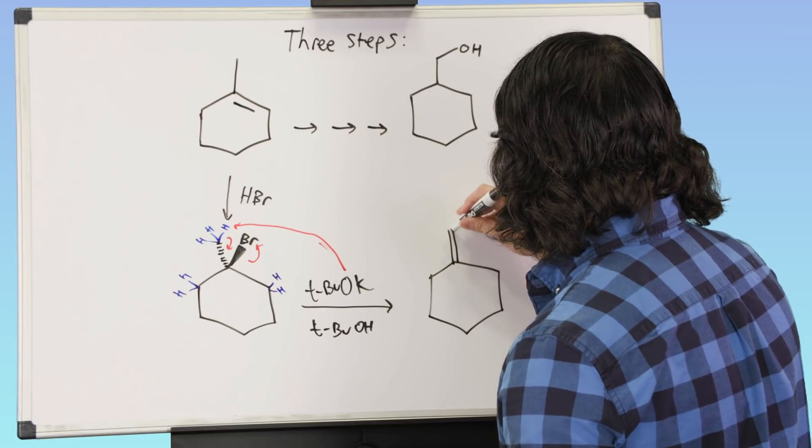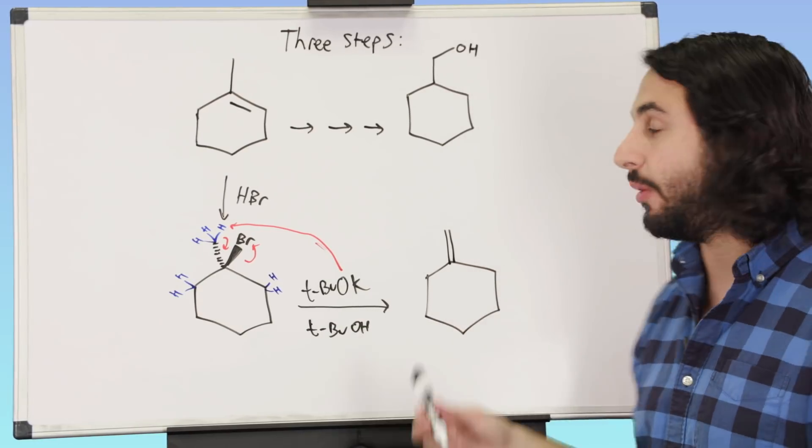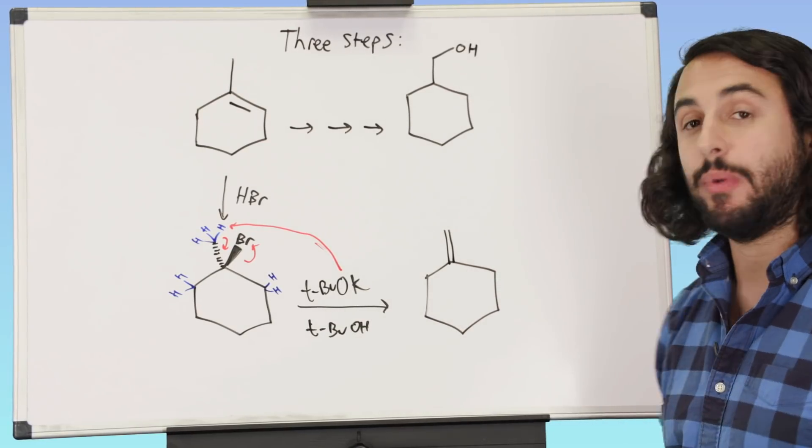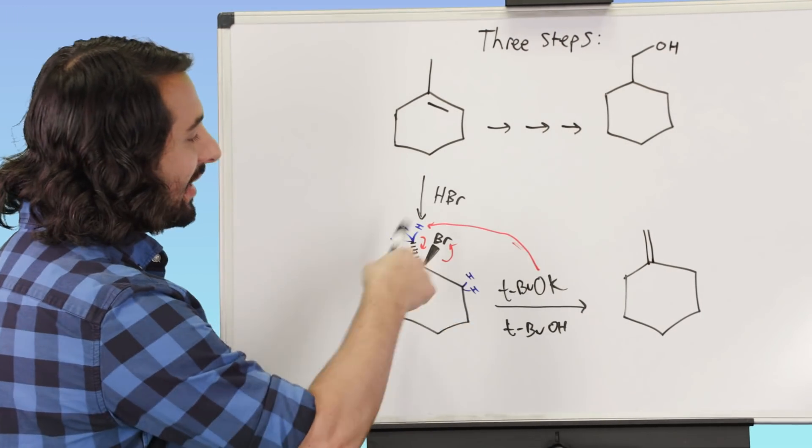Which is a much better situation because now we have pi bond functionality where we want it to be able to do some desired chemistry. So once again bulky base, that's how we did that.